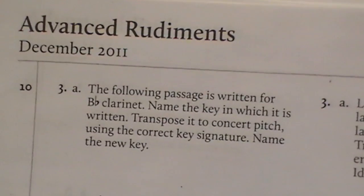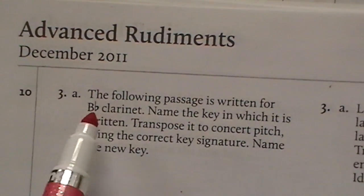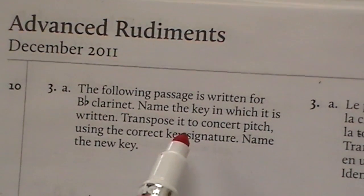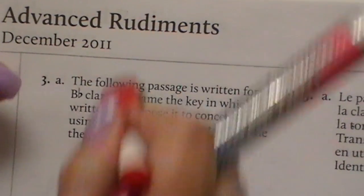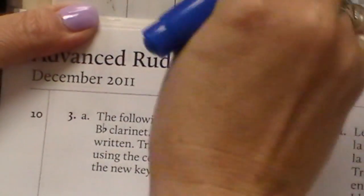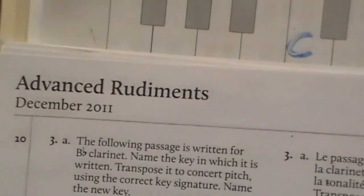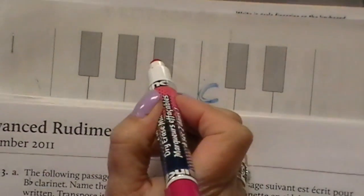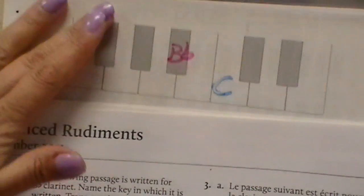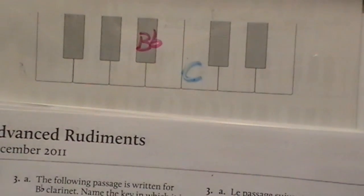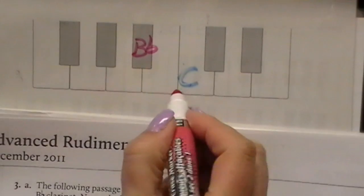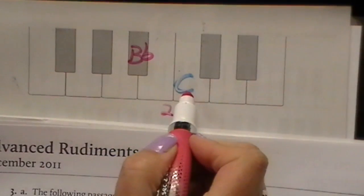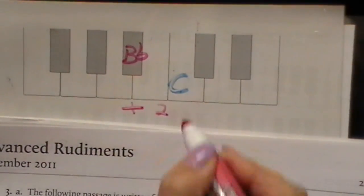This one is asking: the following passage is written for B-flat clarinet — name the key and transpose it to concert pitch. So now our question is about the B-flat. Think of your C instrument because we have to play with the B-flat clarinet. Where's B-flat? From B-flat to C, what is that as an interval? B-flat to C — it's a second: one, two. And in B-flat major, do you play a C like that? Yes. So therefore it's a major second.